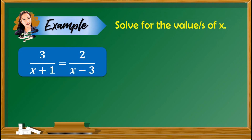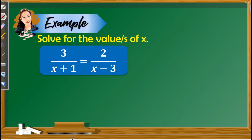Let us now have the following examples. First example, we have 3 over x plus 1 is equal to 2 over x minus 3. Following the four steps discussed, the first thing we have to look for is the LCD. Looking at this equation, the denominator contains x plus 1 and x minus 3. In order to remove these denominators, the LCD contains both of these. So we have to multiply both sides by x plus 1 and x minus 3.